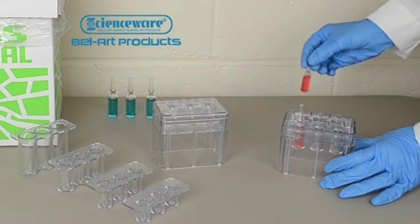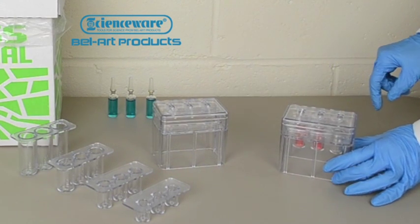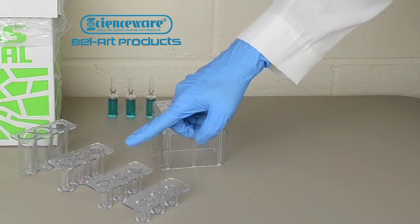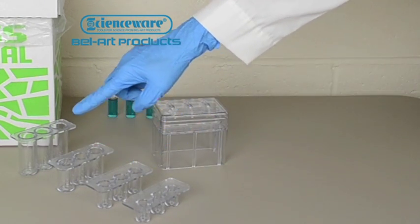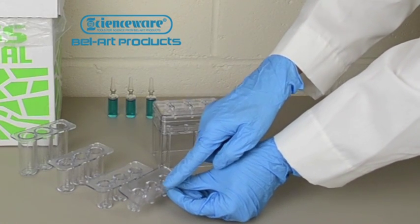Just place up to three ampules in the opener, apply light pressure, and your ampules are open. The device comes with four inserts to allow opening of 1 mil, 2 mil, 5 mil, and 10 mil ampules. An ampule size is indicated on each insert.